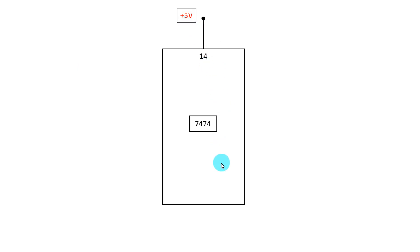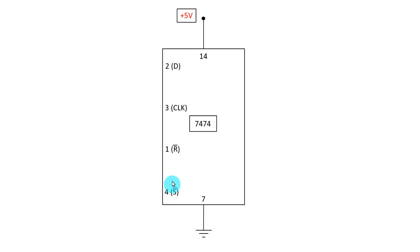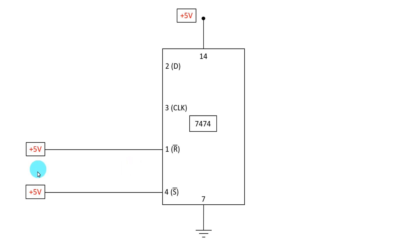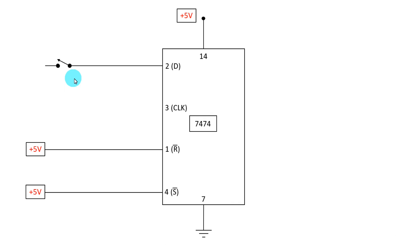We need IC 7474. Pin number 14 is connected to plus 5 volts and pin number 7 is connected to ground. Pin number 2 is D, pin number 3 is clock, pin number 1 is reset, and pin number 4 is set. Since set and reset are active low, we connect these two pins to plus 5 volts to deactivate them. To provide signals to the IC we will connect an SPST switch — one pin of the switch to pin number 2 and the other pin to plus 5 volts. As it is a digital IC, we have to connect a pull-down resistor with a value of 10 kilo ohms.